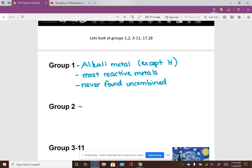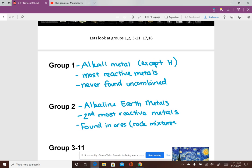Group two, these are called the alkaline earth metals. And they're the second most reactive metals. They're not as reactive as group one, but they're pretty darn reactive. They're mostly found in ores, which are rock mixtures. So they can be mined. And that's why they're called alkaline earth metals because of where they're found. So that's what's important about group two.